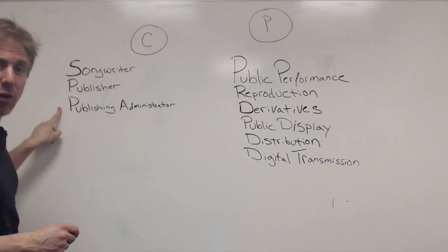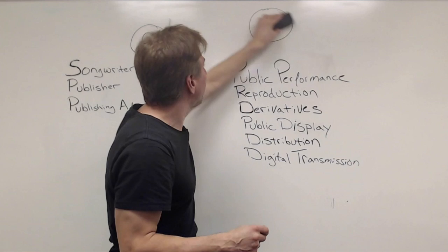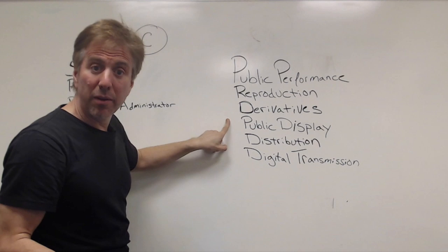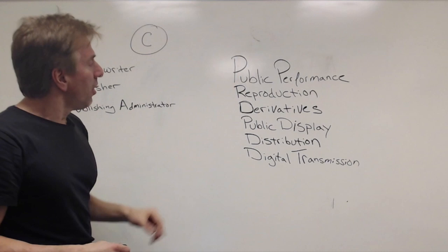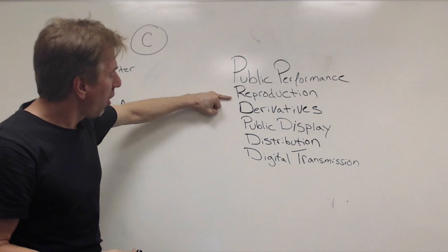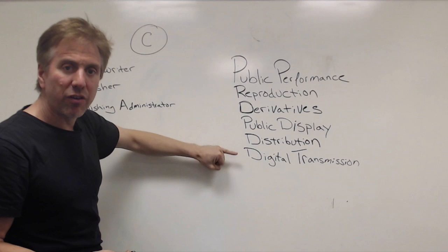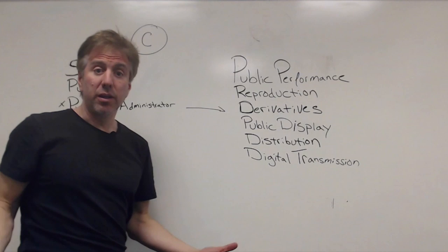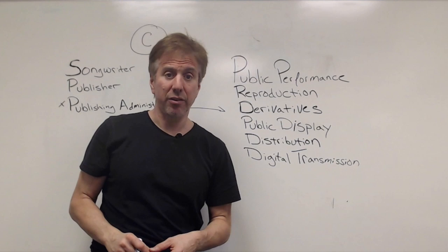So publishing administrator now has to deal with what I call six slices of copyright. When you get this copyright here to your musical composition, you now have to license and collect. You don't have to, but if you want to make a business of it, license and collect off of these six slices. So you have the right of public performance, the right of reproduction, the right of derivatives, the right of public display, the right of distribution, and the right of digital transmission. These are the six slices of copyright that you, as the publishing administrator, have to license and collect throughout the world if you'd like to make money off of your musical composition or make sure people are properly licensed.